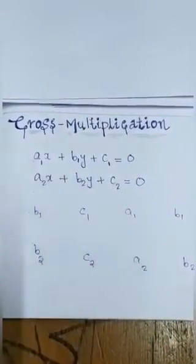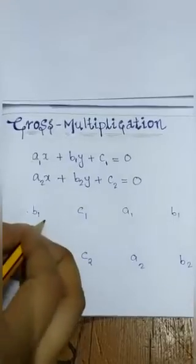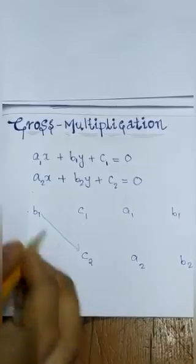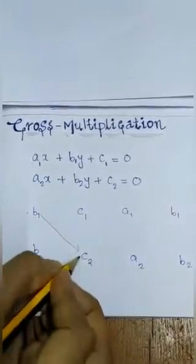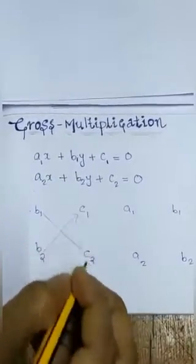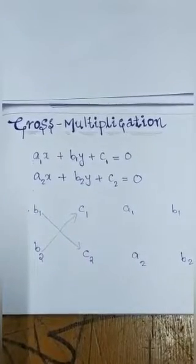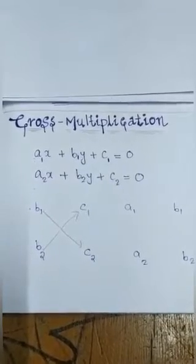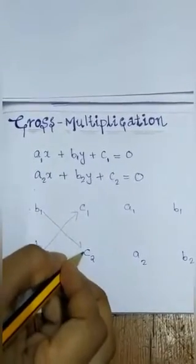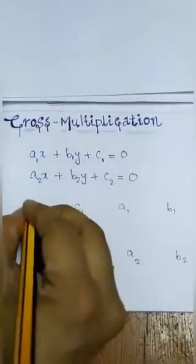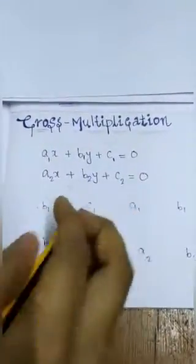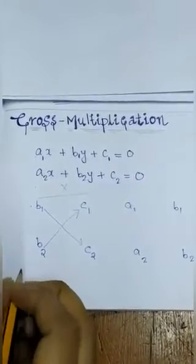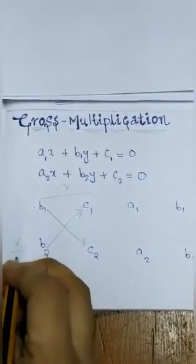Now, we have to multiply using the arrows indicated. In cross multiplication, there exists a fraction with x, y, and 1. The numerator is x. We need to find the denominator. The denominator is formed by cross-multiplying: b1 into c2, and b2 into c1.